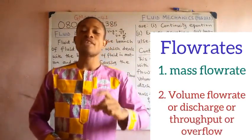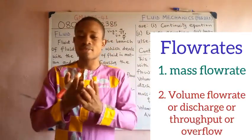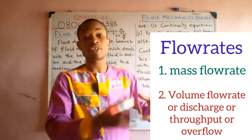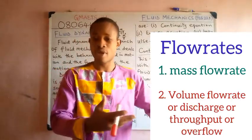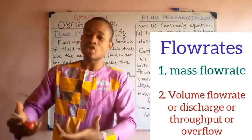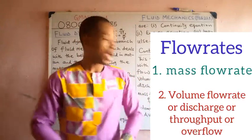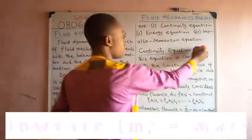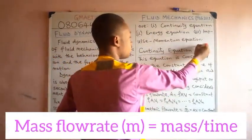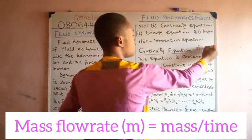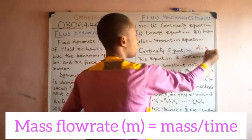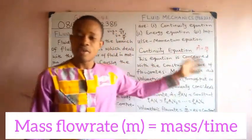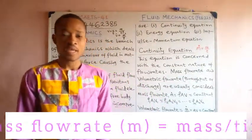The mass flow rate is simply the mass of fluid flowing through a given section of a pipe within a given time. So the mass flow rate, denoted ṁ, is the mass of fluid flowing per unit time. That's the basic definition of mass flow rate.